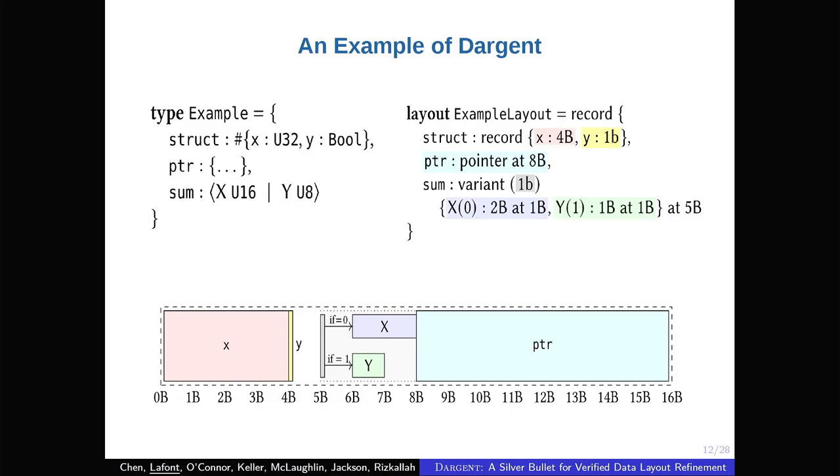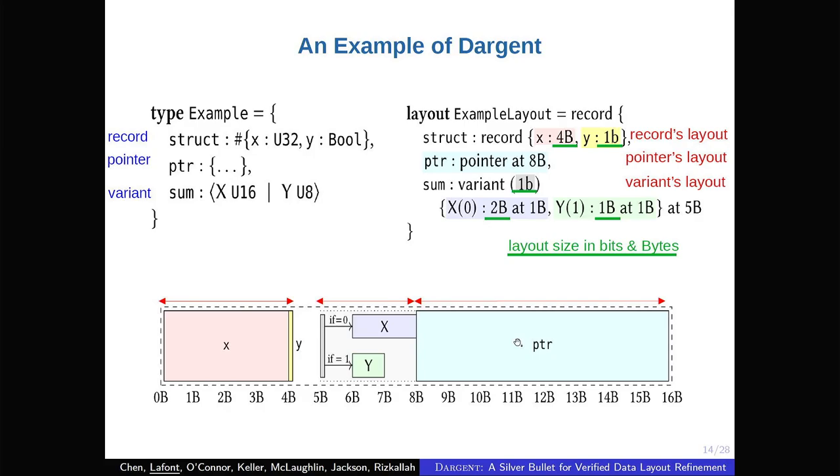So here is an extensive example of Dargent specification. On the left, you have a Cogent type. And on the right, a layout that could be applied to this type. And below a graphical representation of the layout. In this type, you have three fields. The first one is an inline record with two subfields, X and Y. Have a pointer type. And we have a client type with two constructors, X and Y, each with its own argument.